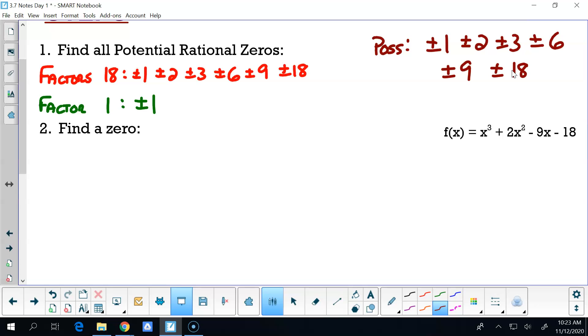any of those numbers synthetically. So if I try one, for instance, so I'm going to try one synthetically into 1, 2, -9, -18. And if I get a zero down here, I found one. Here we go. One, one, three, three, negative six, negative six, negative fourteen. Not a zero, right? Because it didn't end up with zero. So one is off our list, and my numbers kind of didn't get very big here.